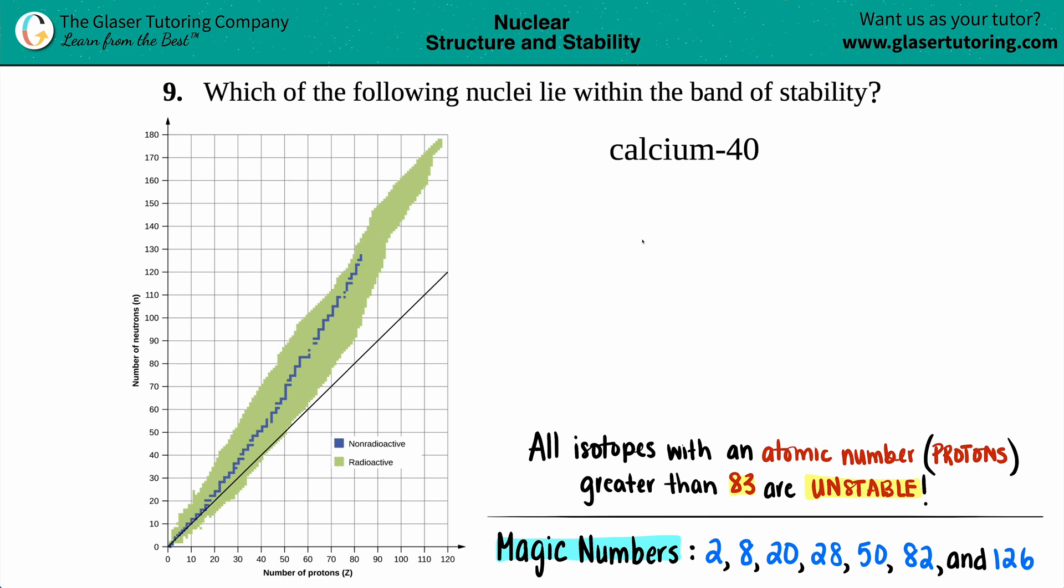Number nine, which of the following nuclei lie within the band of stability? And then we have calcium-40. Okay, so I have a picture of the band of stability on the left side just in case we need it.